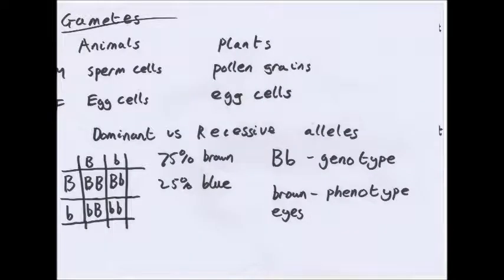Gametes are sex cells. In animals, males have sperm cells and females have egg cells. In plants, pollen grains are the male gametes and egg cells are female.